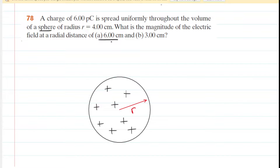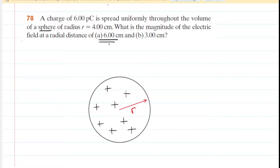What we need to do is apply Gauss' Law. Gauss' Law requires us to first select a Gaussian surface. And because our charge is spread uniformly across a sphere, it makes the most logical sense to use a spherical Gaussian surface. We're going to draw a spherical Gaussian surface — a sphere concentric with the sphere of positive charge — and we're going to make sure that we draw this sphere with a radius of 6 centimeters.